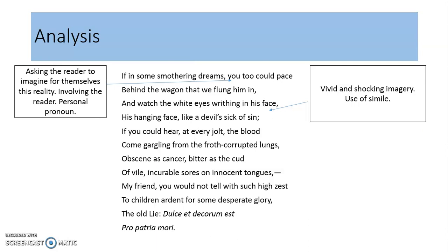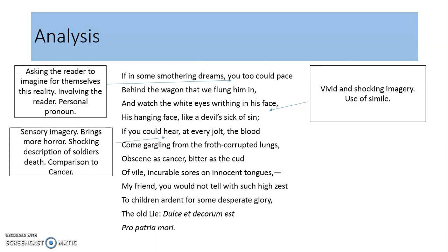'If you could hear at every jolt the blood come gargling from the froth-corrupted lungs, obscene as cancer, bitter as the cud of vile incurable sores on innocent tongues.' There is sensory imagery here, encouraging us to use our sense of hearing — you can hear that gargling of blood from the froth-corrupted lungs. We've also got a comparison of the gas as 'obscene as cancer.' The phrase 'incurable sores on innocent tongues' emphasises that these soldiers are innocent; they've essentially done nothing wrong and are giving up their lives to fight for their country.